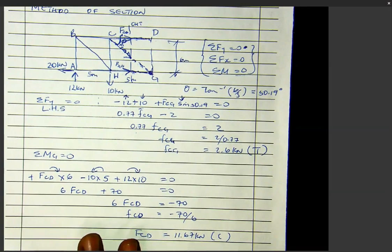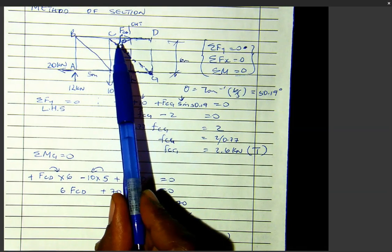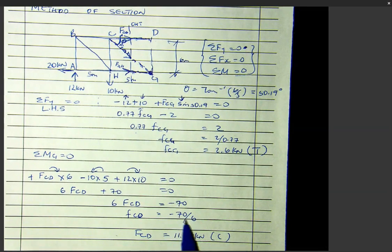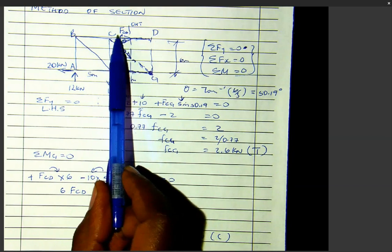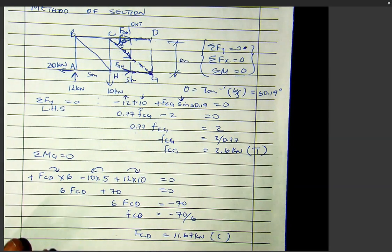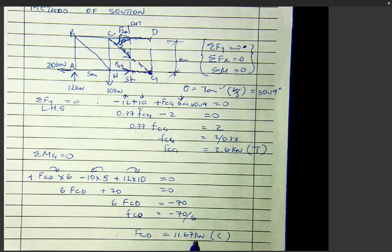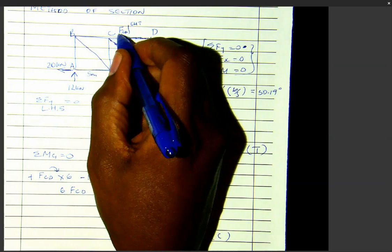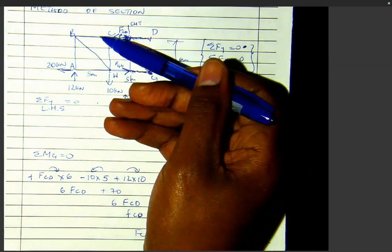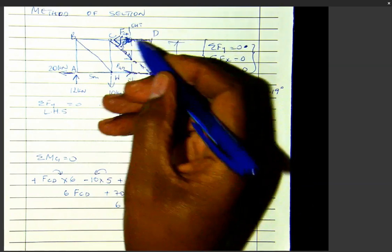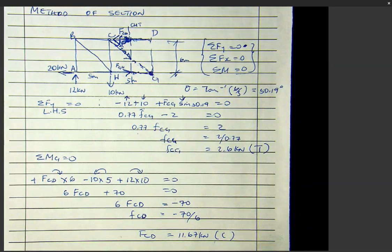Why compression? I assumed tension, I got a negative answer, so my assumption is incorrect. But you don't write the negative answer in your final result — you write the correct direction. You can come back and change the arrow: the force is not going away from the joint, it's going the opposite direction — to the left, compressing the joint. That's compression.